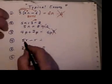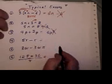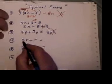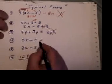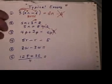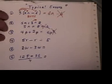Next error. 5r take away r. A lot of people will take the r, take away the r, and they'll say the answer is just 5, because the two r's have cancelled.